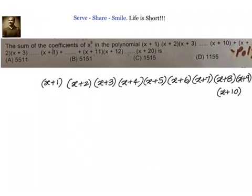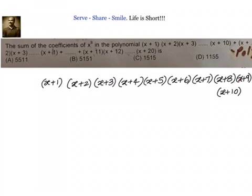Now, what is the highest power? If you try to take this term of the polynomial and expand it, what will be the highest power we will get? That is x power 10. But what we want is the coefficient of x power 9. So what should we do in that case? What we have to do is we have to take 9 terms where we multiply x nine times so that we will have x power 9, and then multiply with the left-out constant term. Suppose I have taken these 9 x terms, I multiplied and got x power 9, then I have to multiply with 10.